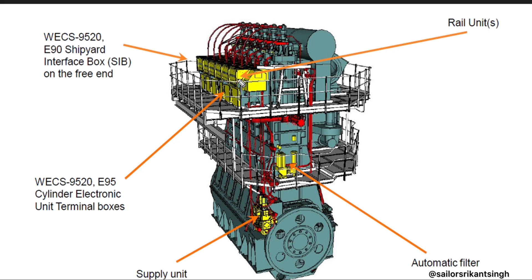These are the rail units, and this is the VCS 9520 electronic control — you can say your PCBs or electronic cards are present over here only, on these sides. You can see these boxes are there.